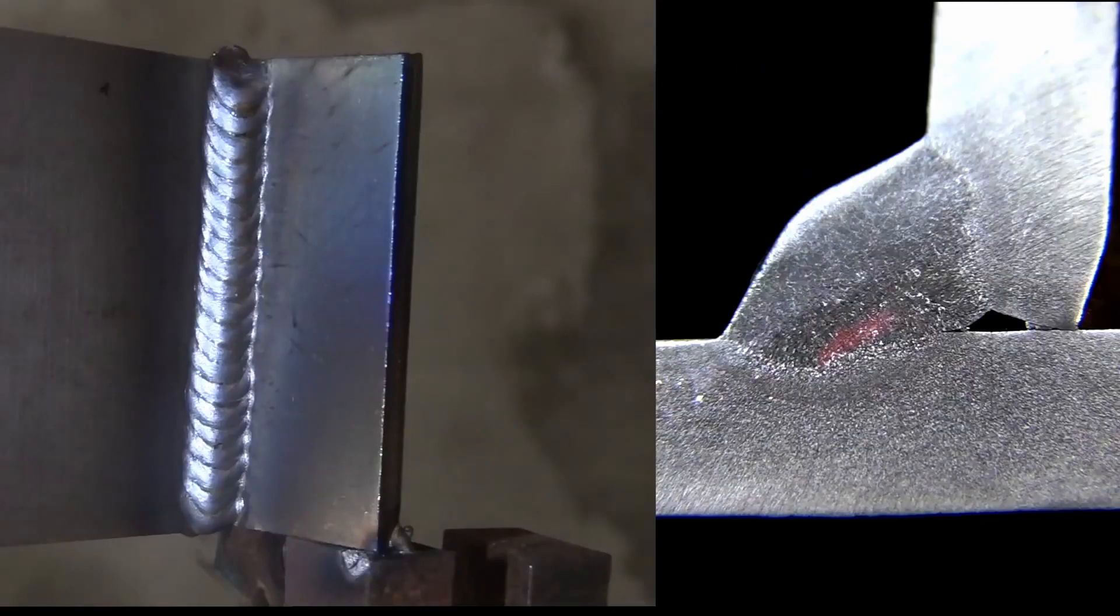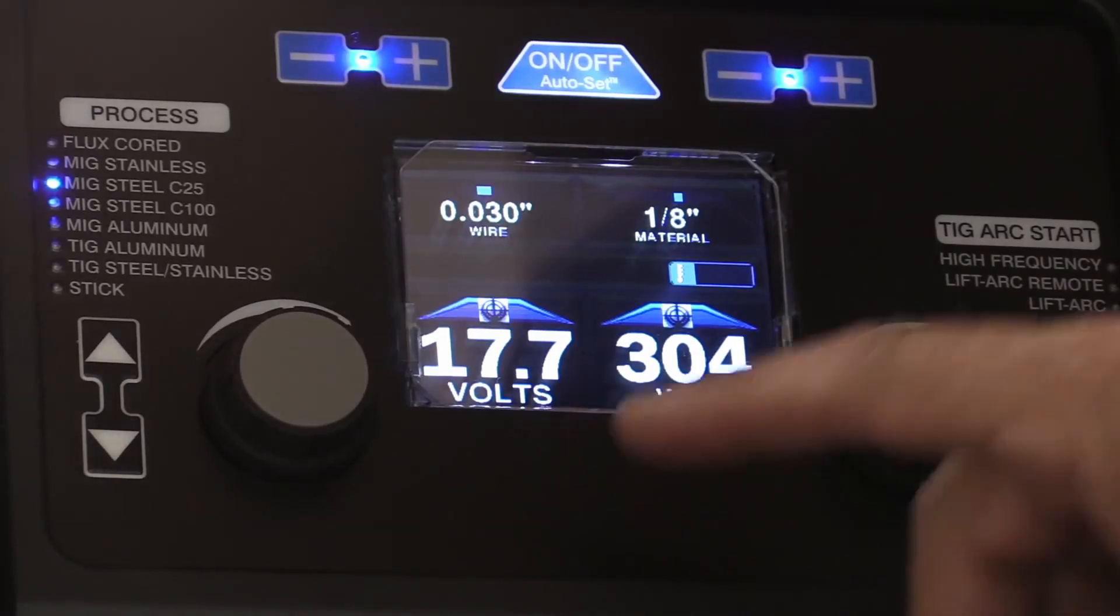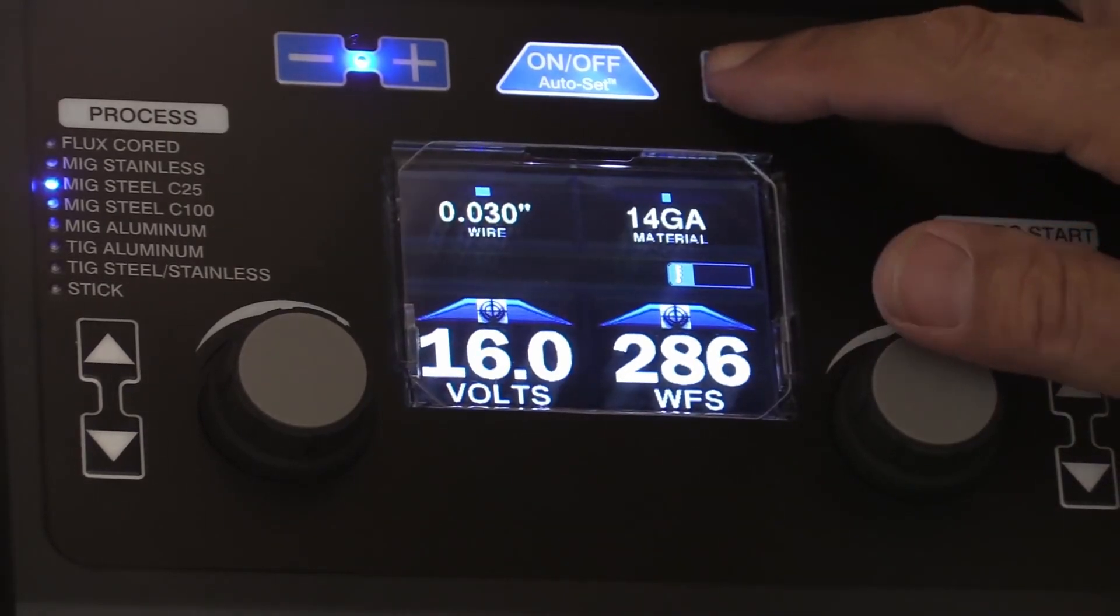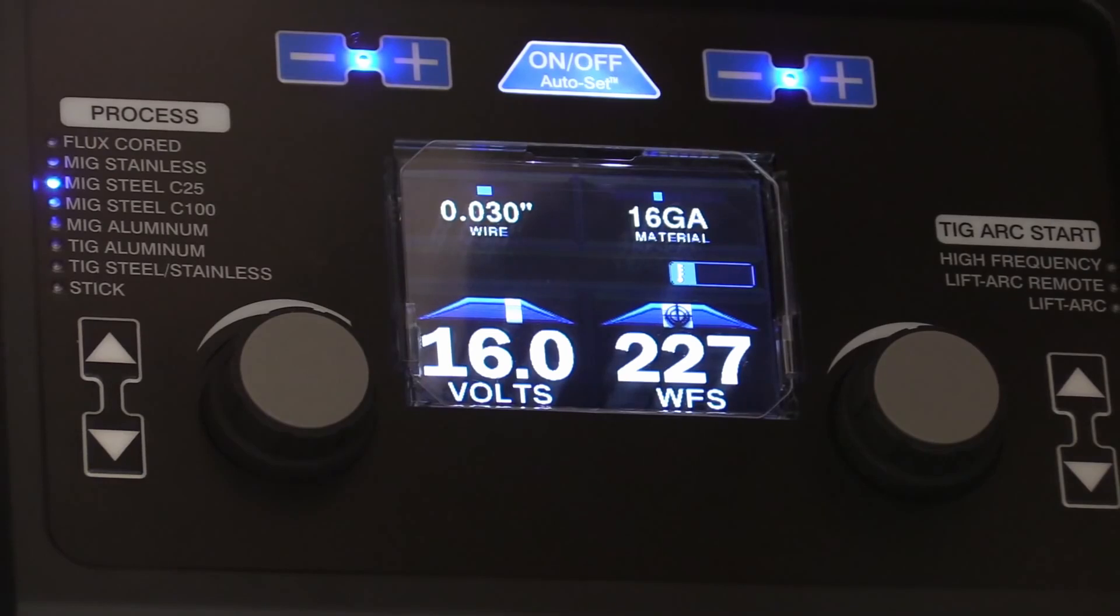I also did one where I just bumped the setting down one thickness and it actually was okay too, just a little bit more crown, more convexity. If you could stand that you might just want to do that. I tried the same thing on vertical uphill on one-eighth inch thick steel, which I normally wouldn't do, but I just wanted to see if it would work. So I bumped the settings down, the auto set settings down to 16 gauge, and again I tweaked the voltage up just a tad, seemed to smooth things out a bit.